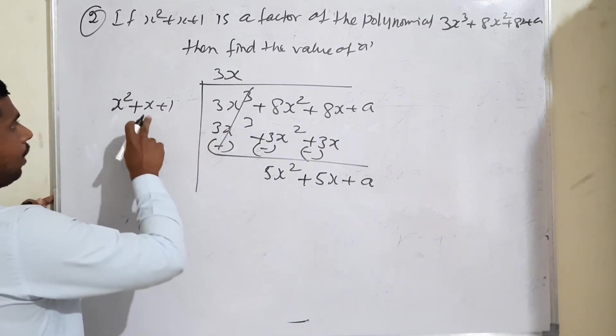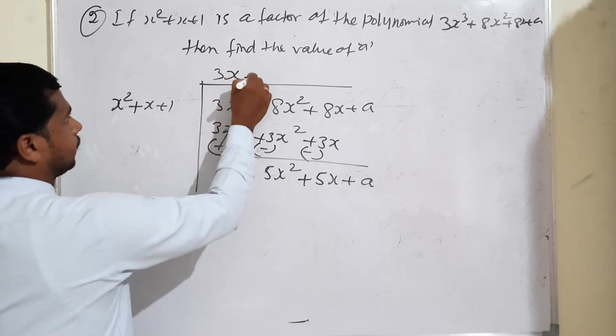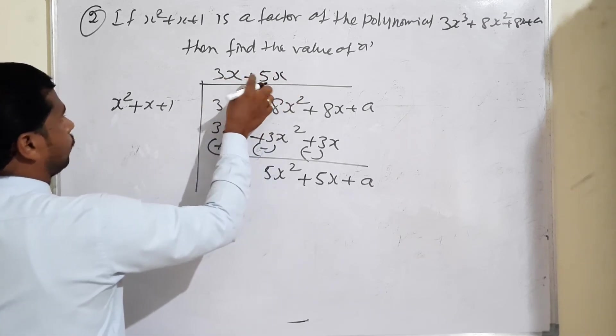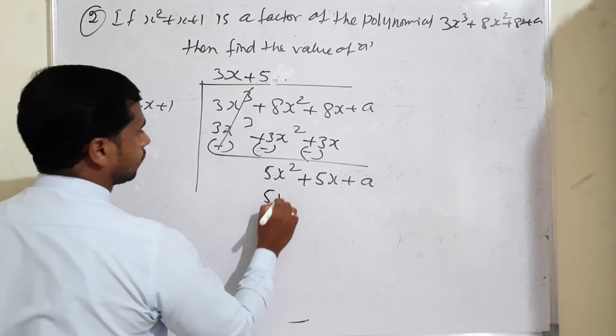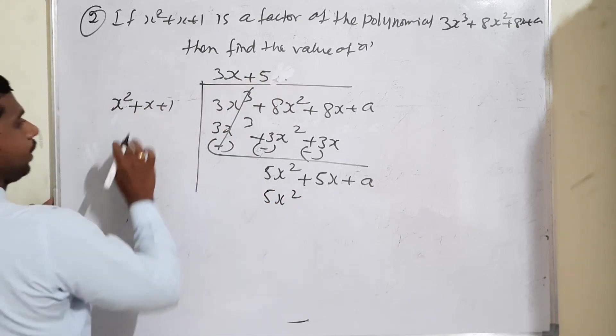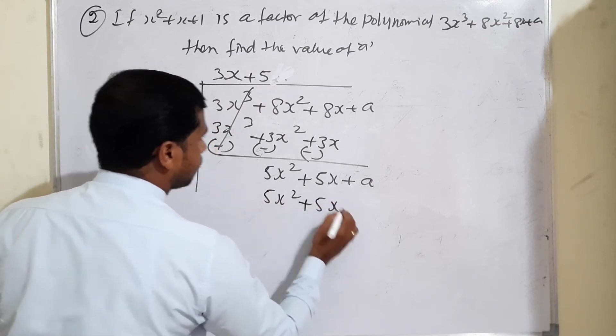Next condition: 5x. So 5 is enough because x² is there now. 5 times x² is 5x², and 5 times x is 5x.